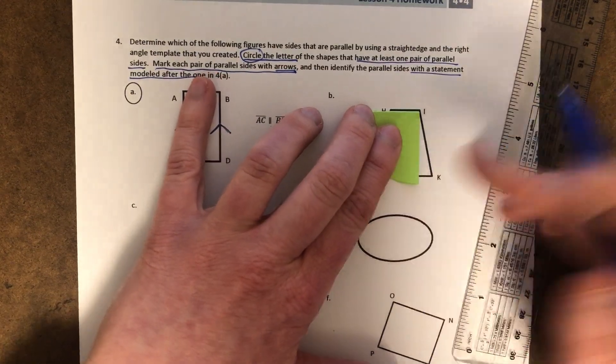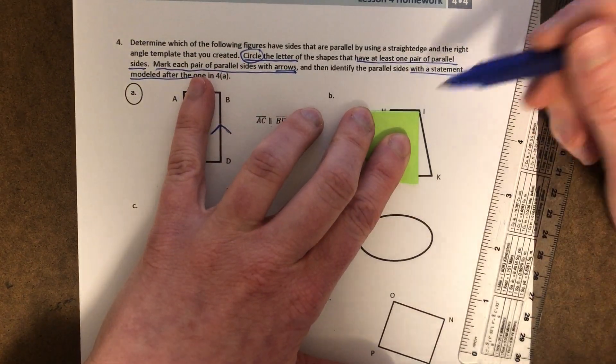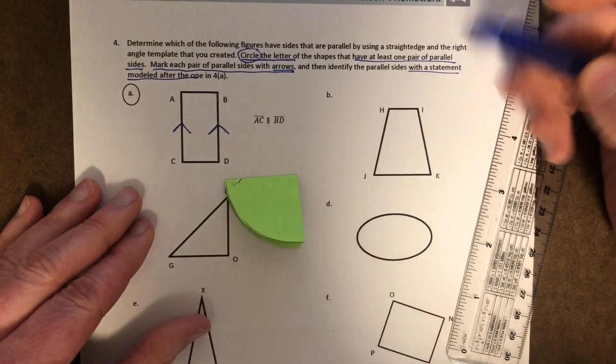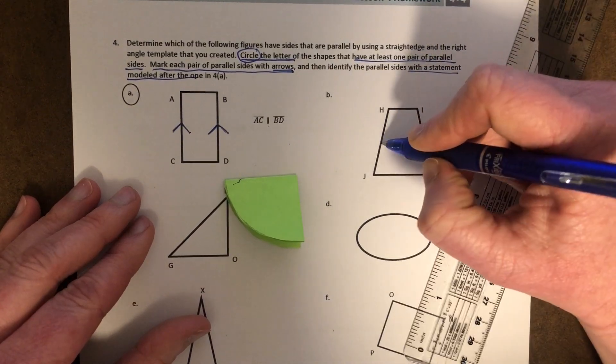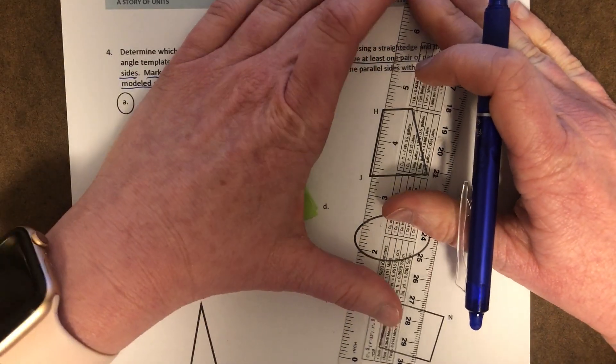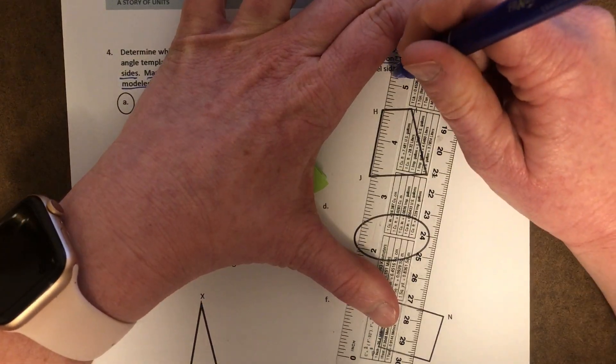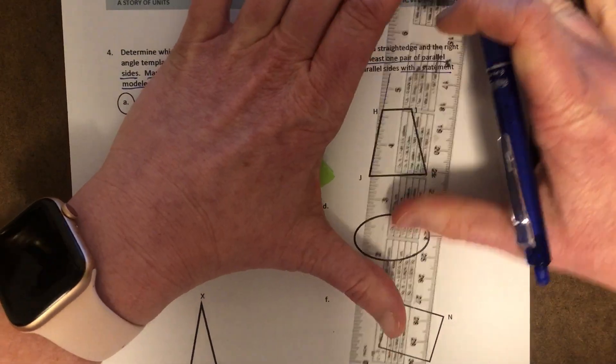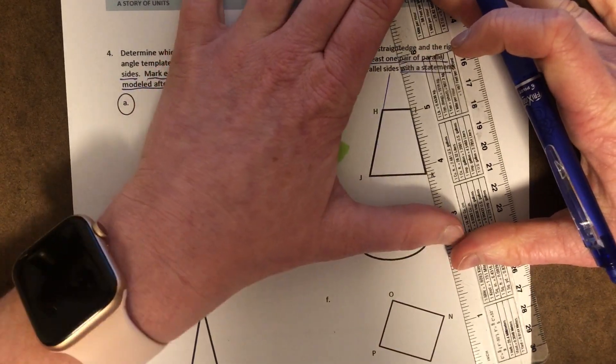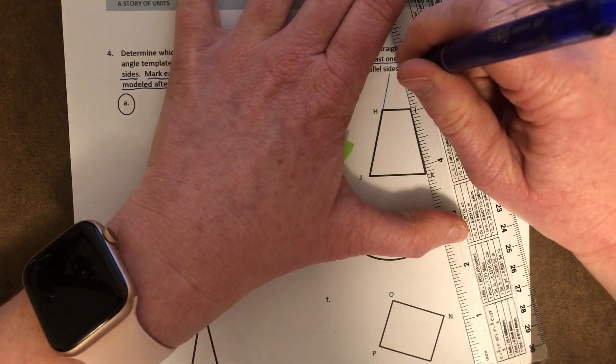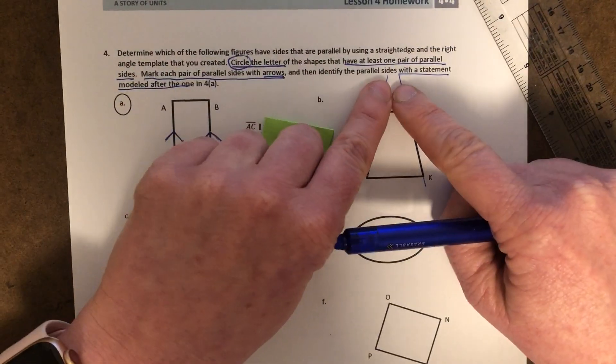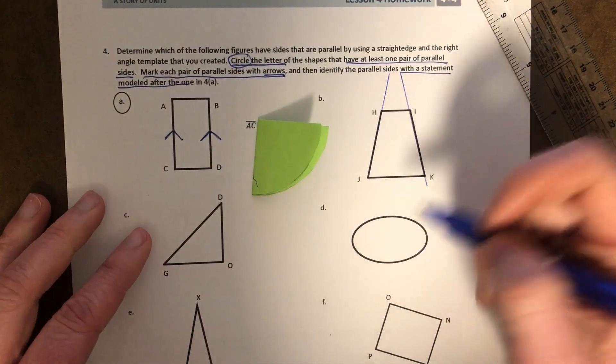Same with this angle over here. This one's creating an obtuse angle. So I know that these are not parallel lines because at some point they will intersect. You can extend them and you'll see that they get closer to intersecting up here. So we know that these are not parallel lines.